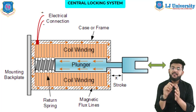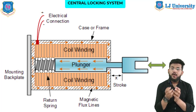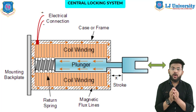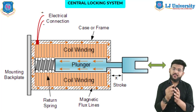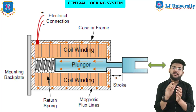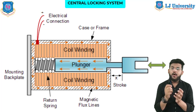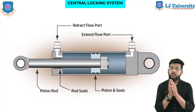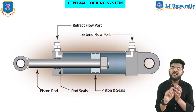The capacitor releases current to activate the lock. Another type uses two capacitors and two relays working in tandem — one pair responsible for locking and another for unlocking the door. When the circuit is closed, current is discharged from the capacitor and the lock is either opened or closed.